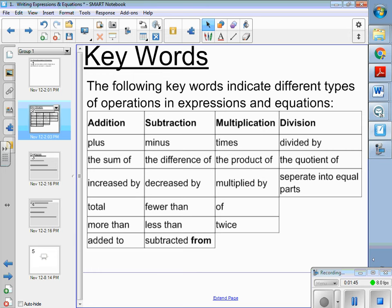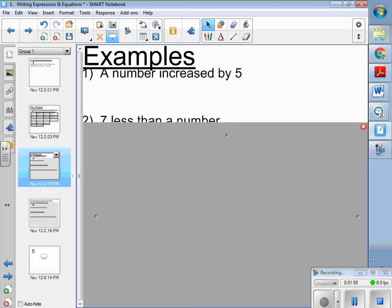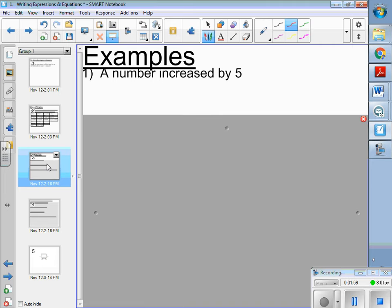So keep this handy because this one's a good piece of notes to have handy when you're translating. So our first one, we have a number increased by five. So a number, we're going to use, you can use whatever variable you want. When I use an x, I usually make a cursive x so it doesn't look like a times sign. Increased by, plus, five.